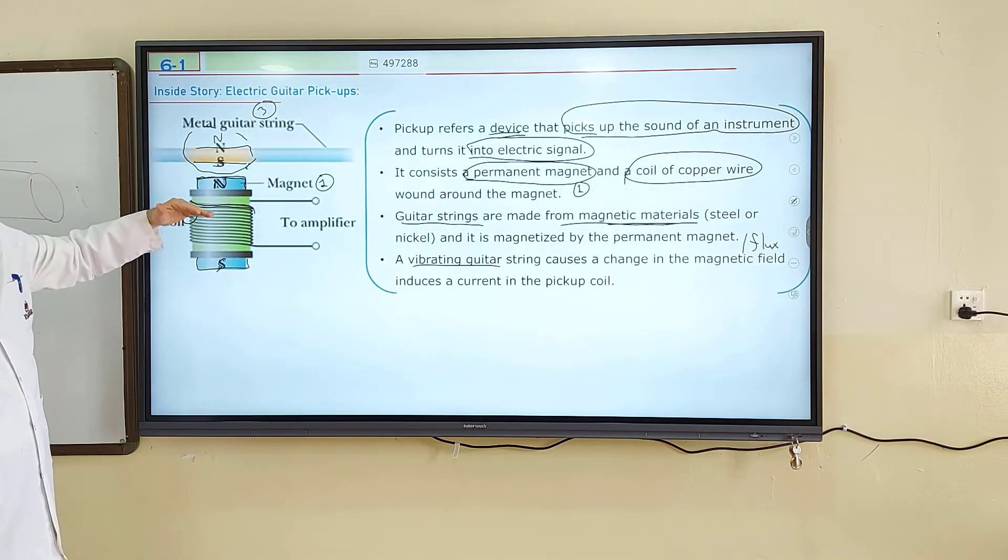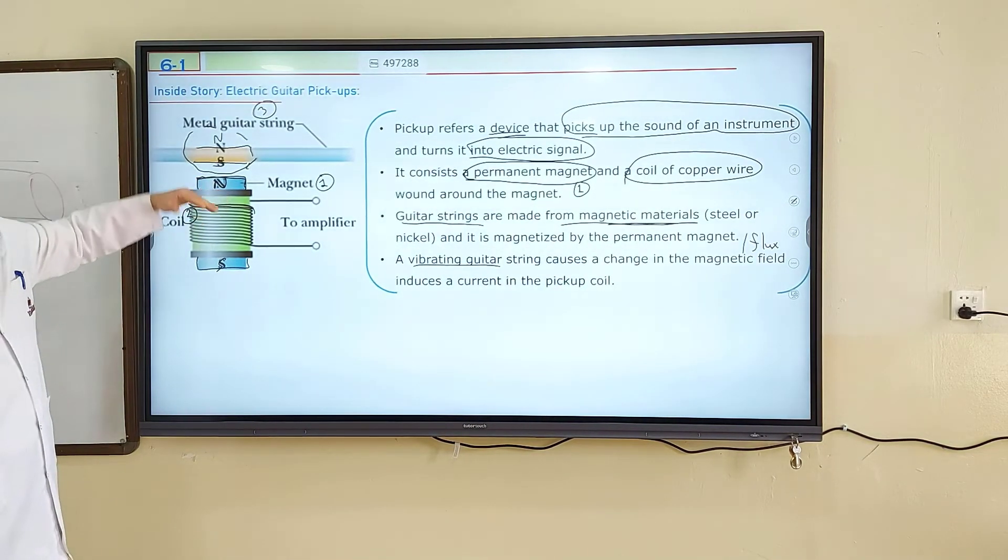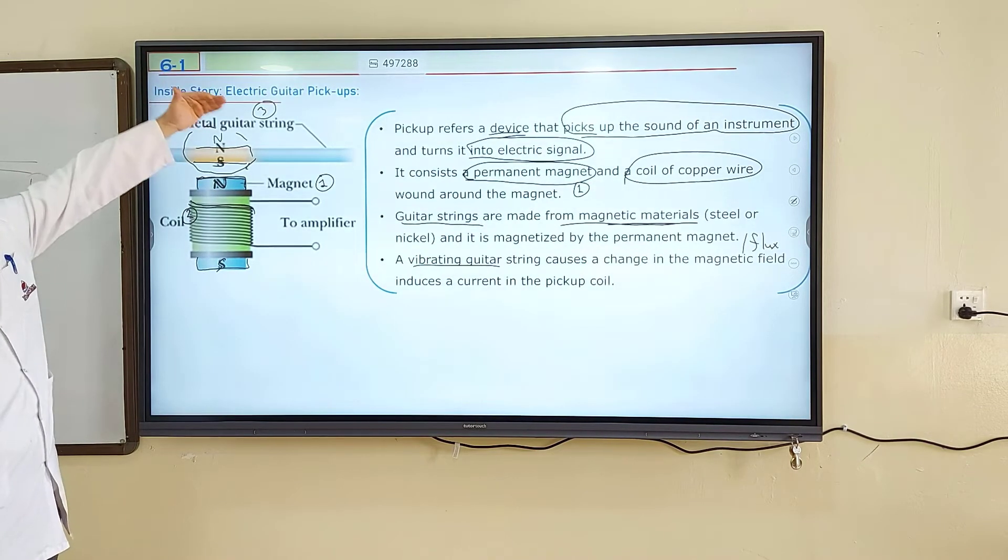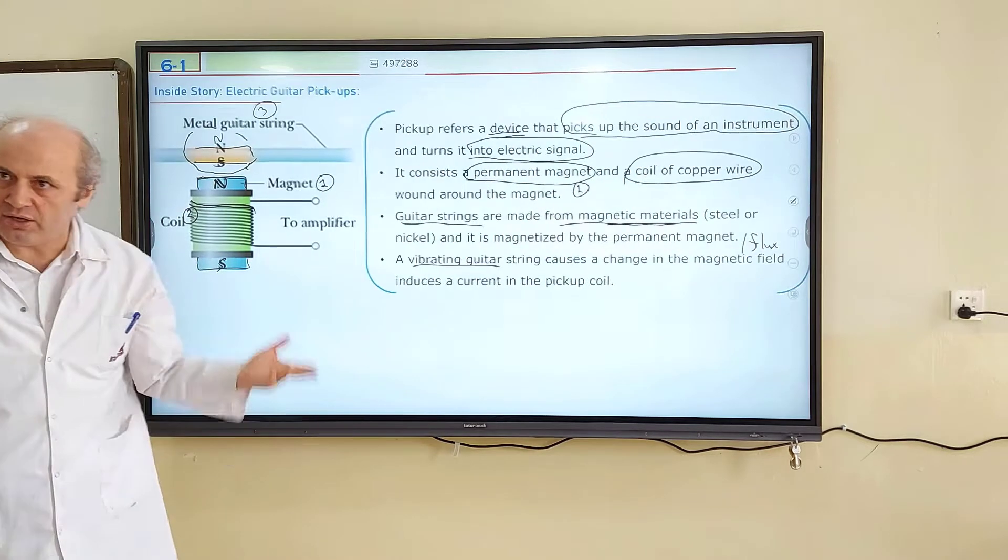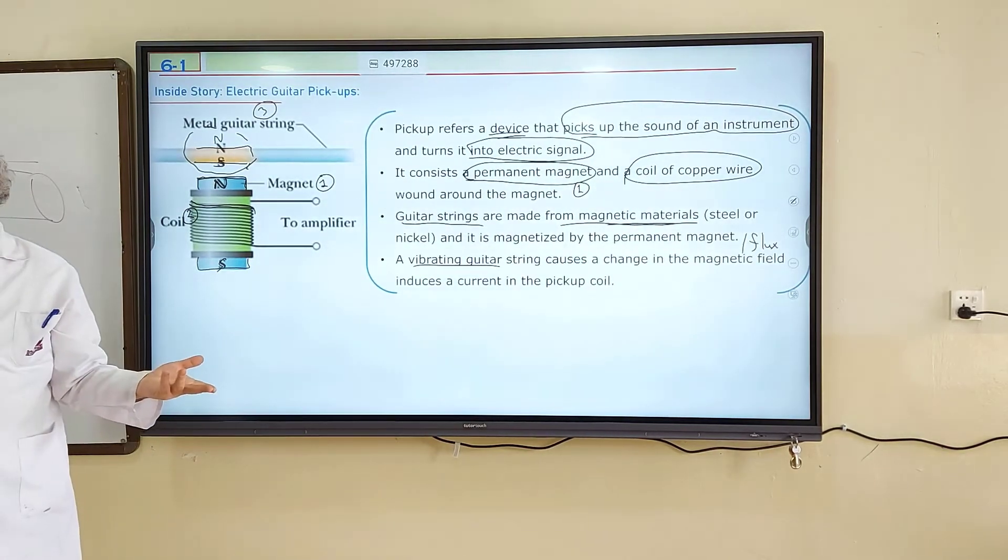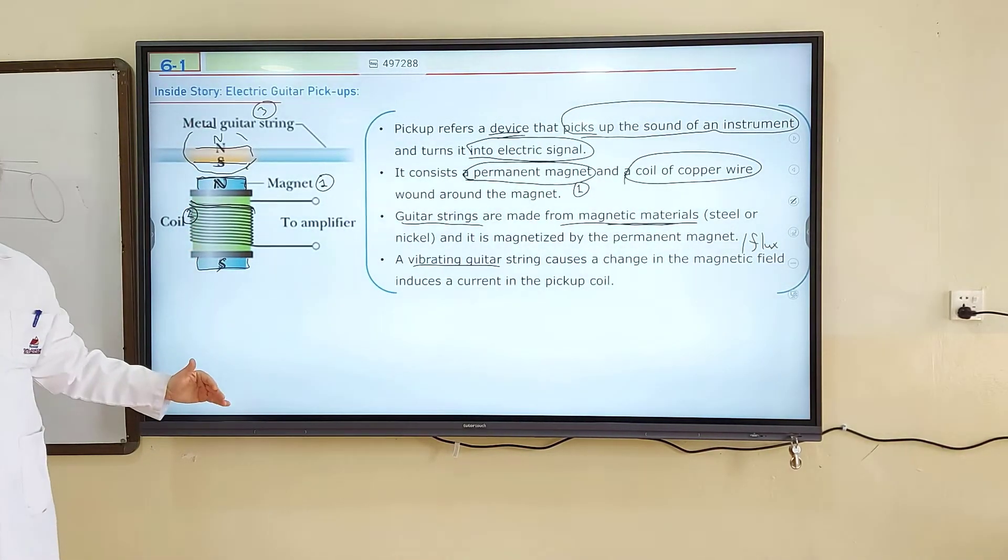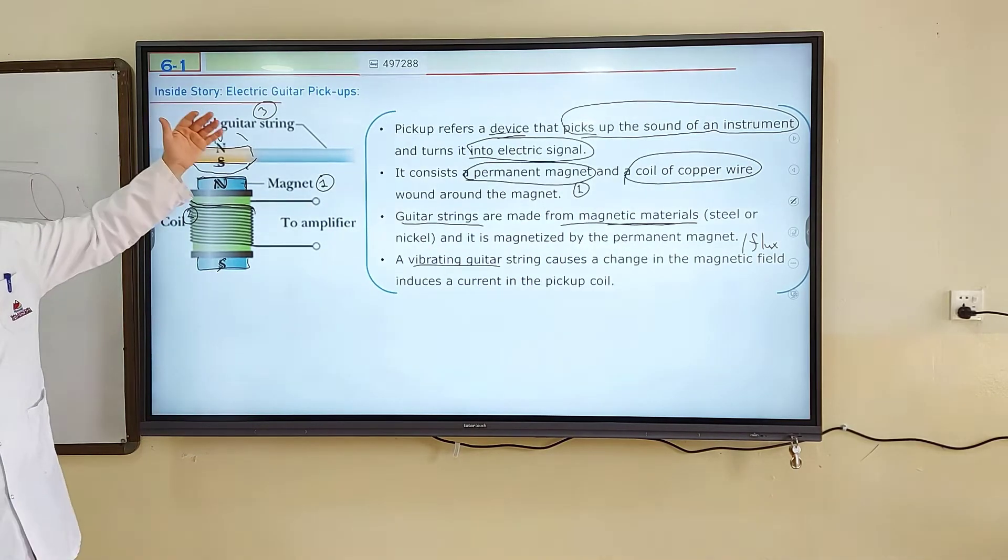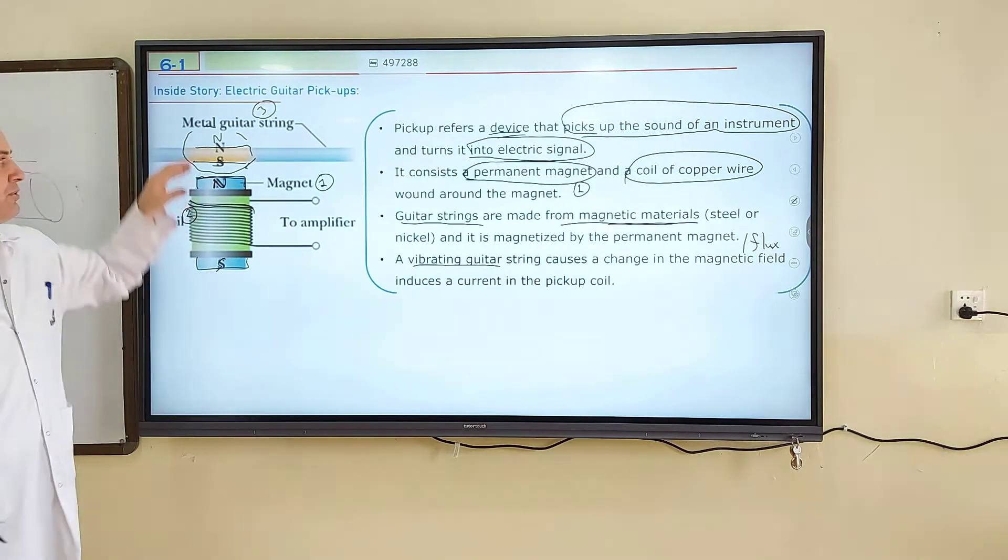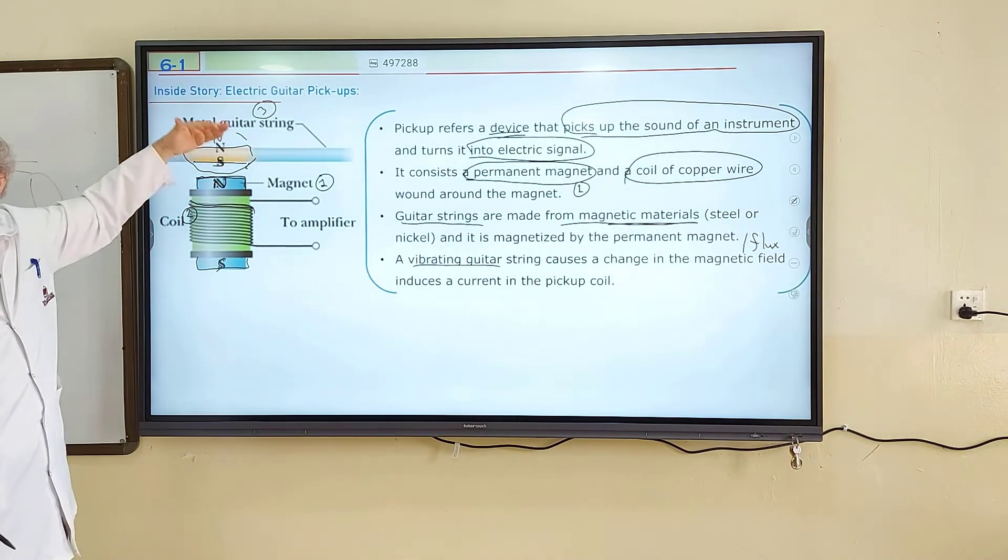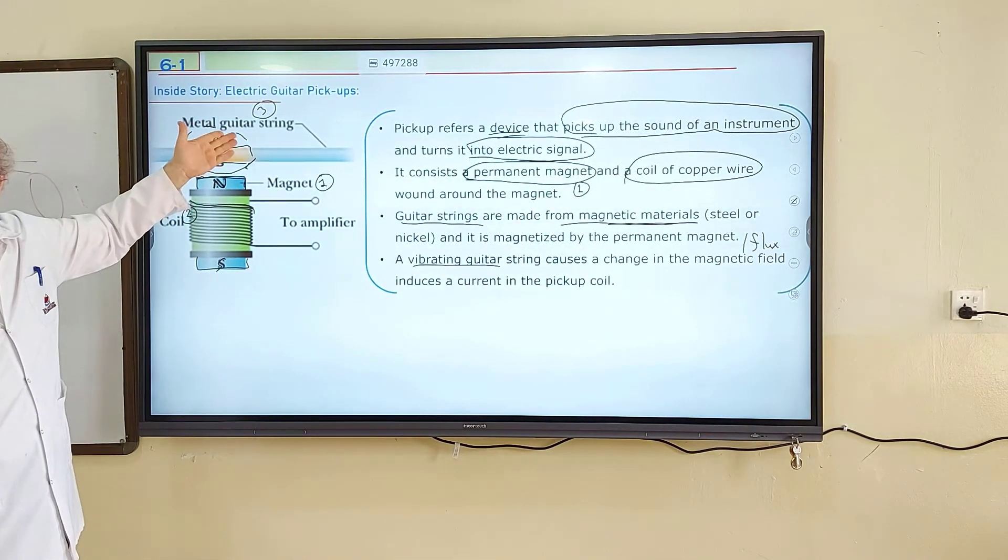When string gets closer, magnetic flux increases. When string gets farther, it decreases. And so we know that increase and decrease in magnetic flux induces current in the coil. Only the directions are different. When it's approaching, positive is the electric current, when moving away, negative, direction changes. So direction of the current, this current changes according to the vibration frequency of this string.